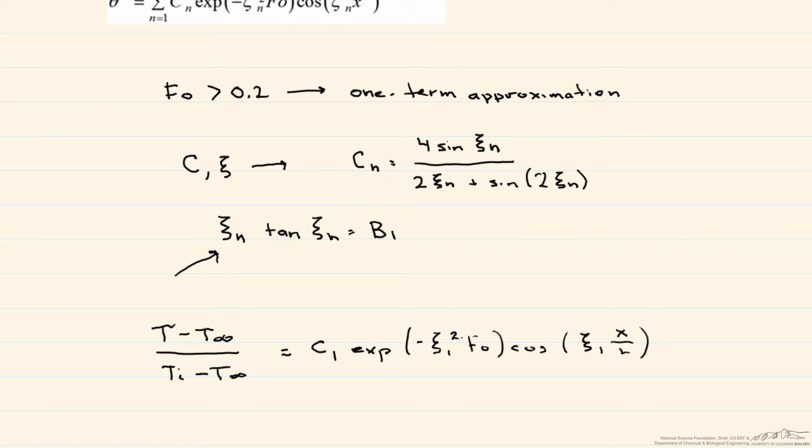and this is multiplied by the cosine of this eigenvalue times x divided by L.